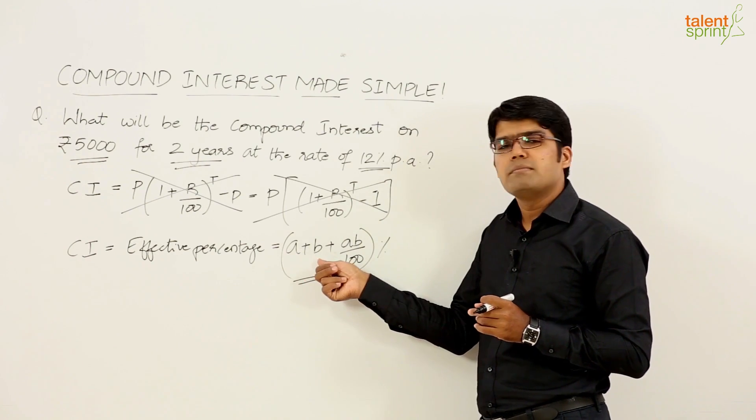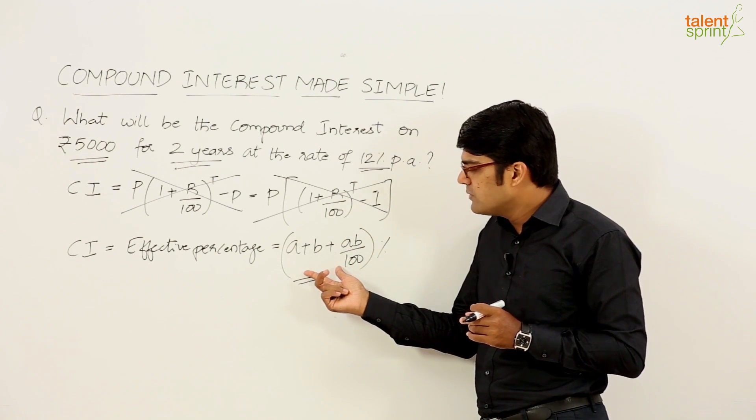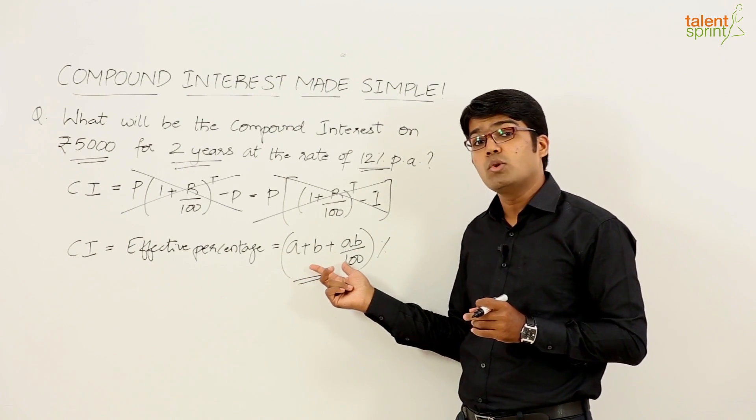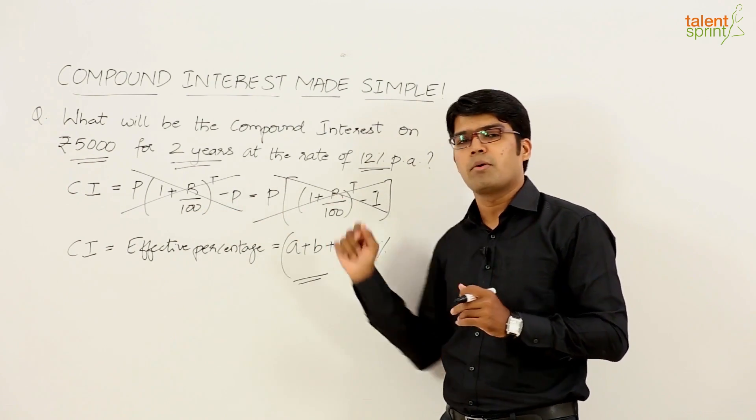A is equal to 12 and B is 12. Let us just substitute the values A and B here and find out what is the effective percentage which is the compound interest.